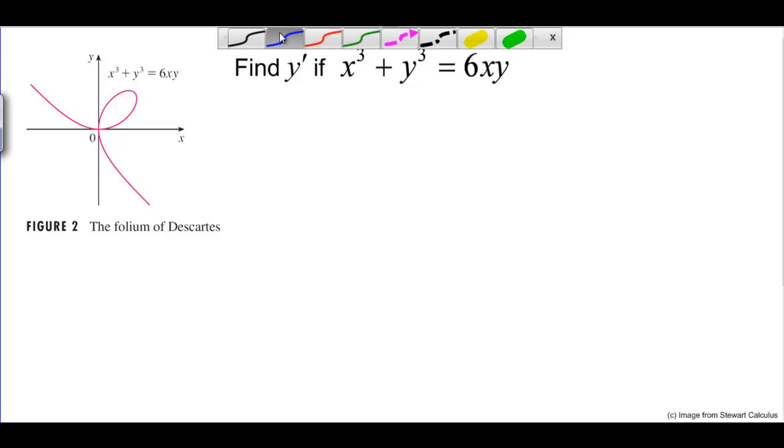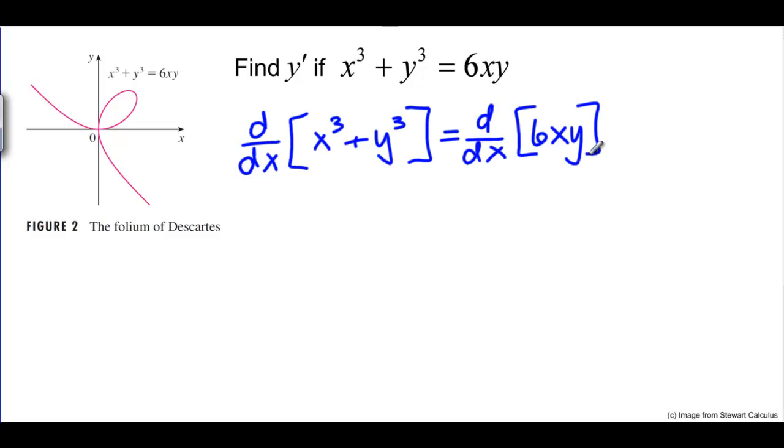The first thing we need to do is take the derivative in terms of x of both sides of this equation. If we're trying to take the derivative of x cubed plus y cubed, we know that this plus sign means we can take each of these derivatives separately. The derivative of x cubed in terms of x is just the straightforward power rule: 3x squared.